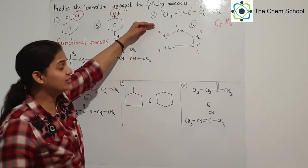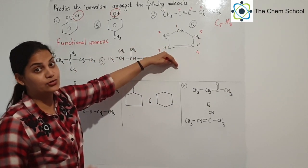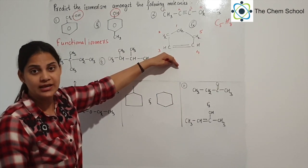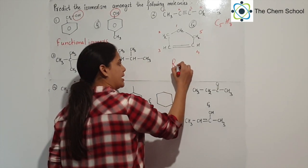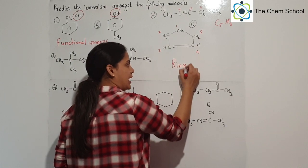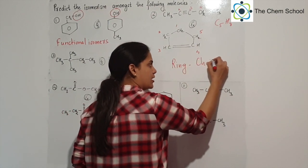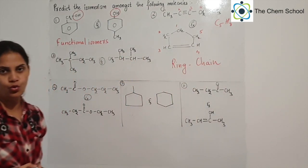So which type of isomers are these? It is ring-chain isomerism. You will classify these as ring-chain isomers.